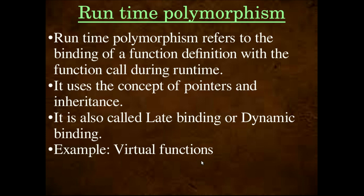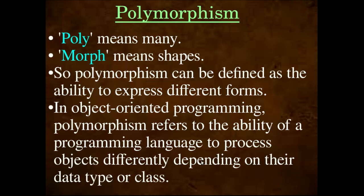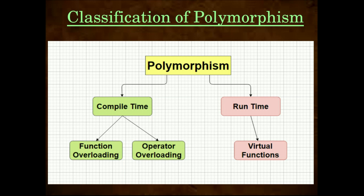To conclude: polymorphism means the ability to express in different forms. In object oriented programming, polymorphism refers to the ability of a programming language to process objects differently. There are two types: compile time polymorphism and runtime polymorphism. Compile time polymorphism includes function overloading and operator overloading and occurs at compile time. Runtime polymorphism occurs at the time of runtime or execution, and its example is virtual functions.